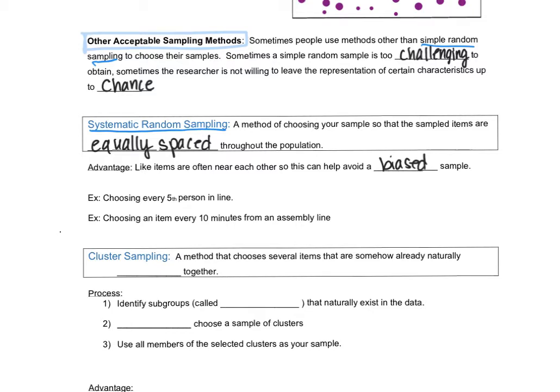Some examples to think about this is like choosing every fifth person in line. So 1, 2, 3, 4, 5, and we choose the fifth person. That's equally spaced. If it were items on like an assembly line, like in a factory, just pick something every 10 minutes. That's equally spaced as well. It's still random, it's just not as random as pulling a number out of a hat.